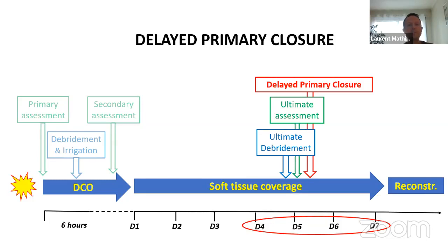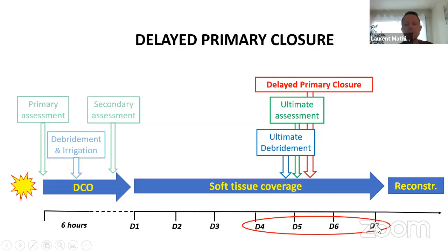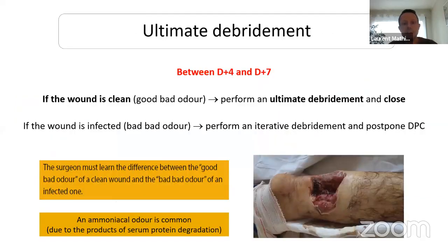Then we move to delayed primary closure, which is ideally performed before day seven — sometimes at day five, sometimes day seven, but sometimes later. If you have a heavily contaminated wound, sometimes you need two or three weeks to decontaminate the wound properly and be sure you can close safely with a limited risk of infection. This timing is an ideal target you cannot always achieve. Ideally you will perform delayed primary closure after four to seven days, but before performing it you must achieve an ultimate debridement and ultimate wound assessment.